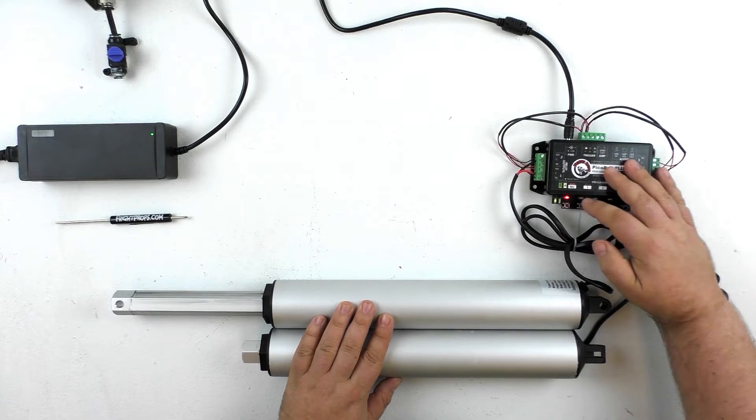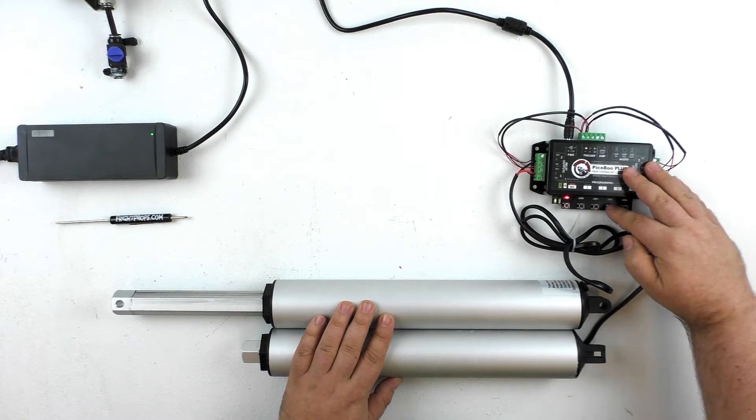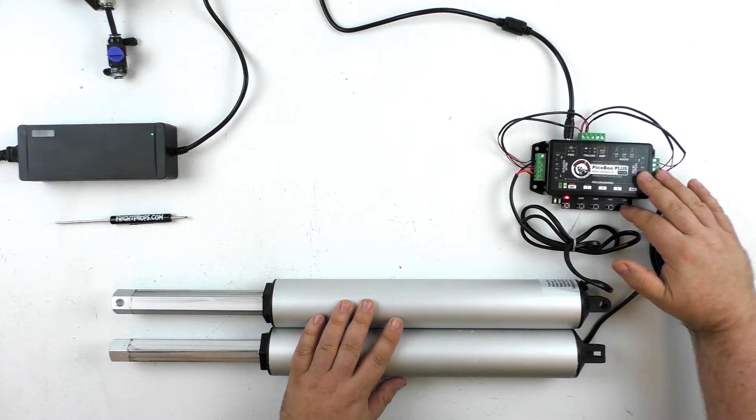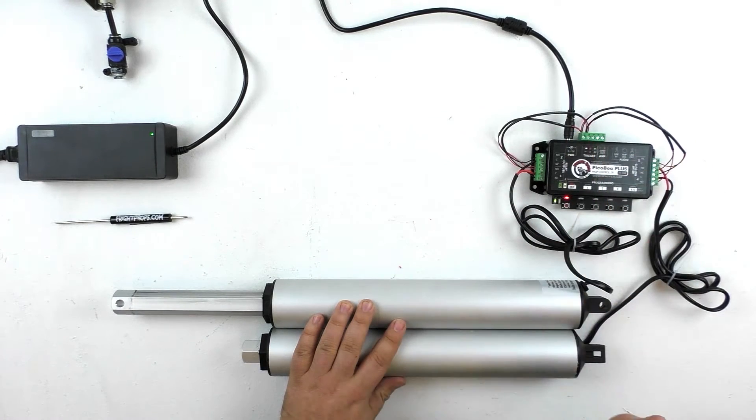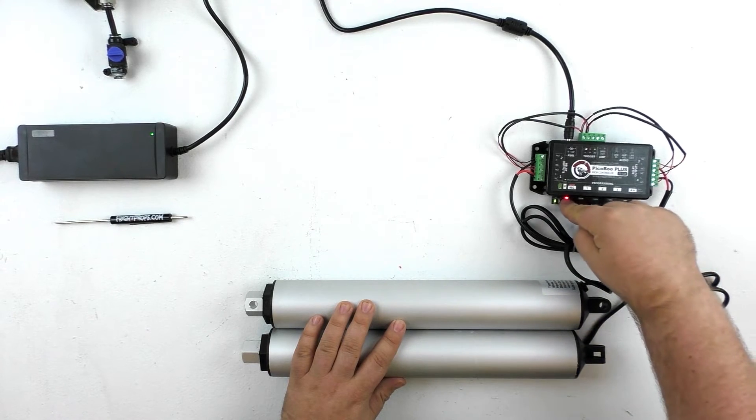We would extend the first linear actuator. That opens the curtain. Then the second linear actuator would extend, which makes the head peer forward. Then we would retract the second actuator for the head to come back. And then retract the first actuator for the curtain to close. And tap record.